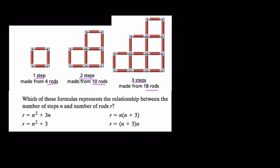is made from eighteen rods. So one step, four rods. Two steps, ten rods. Three steps, eighteen rods. Now, my first approach, even before I read the question, is to really set this up into a table. The step number, right, one, two, and three, leads us to different numbers of rods. Well, four and ten and eighteen.